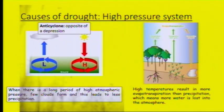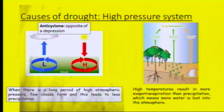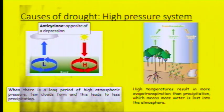Drought is caused when we've got a high-pressure system, so anti-cyclones form, and we've got really hot sun in the summer, which means we get a lot of evapotranspiration — which is the sum of evaporation and transpiration. All the water is lost into the atmosphere and it's not on the ground anymore. We also get very few clouds forming, which leads to less precipitation.